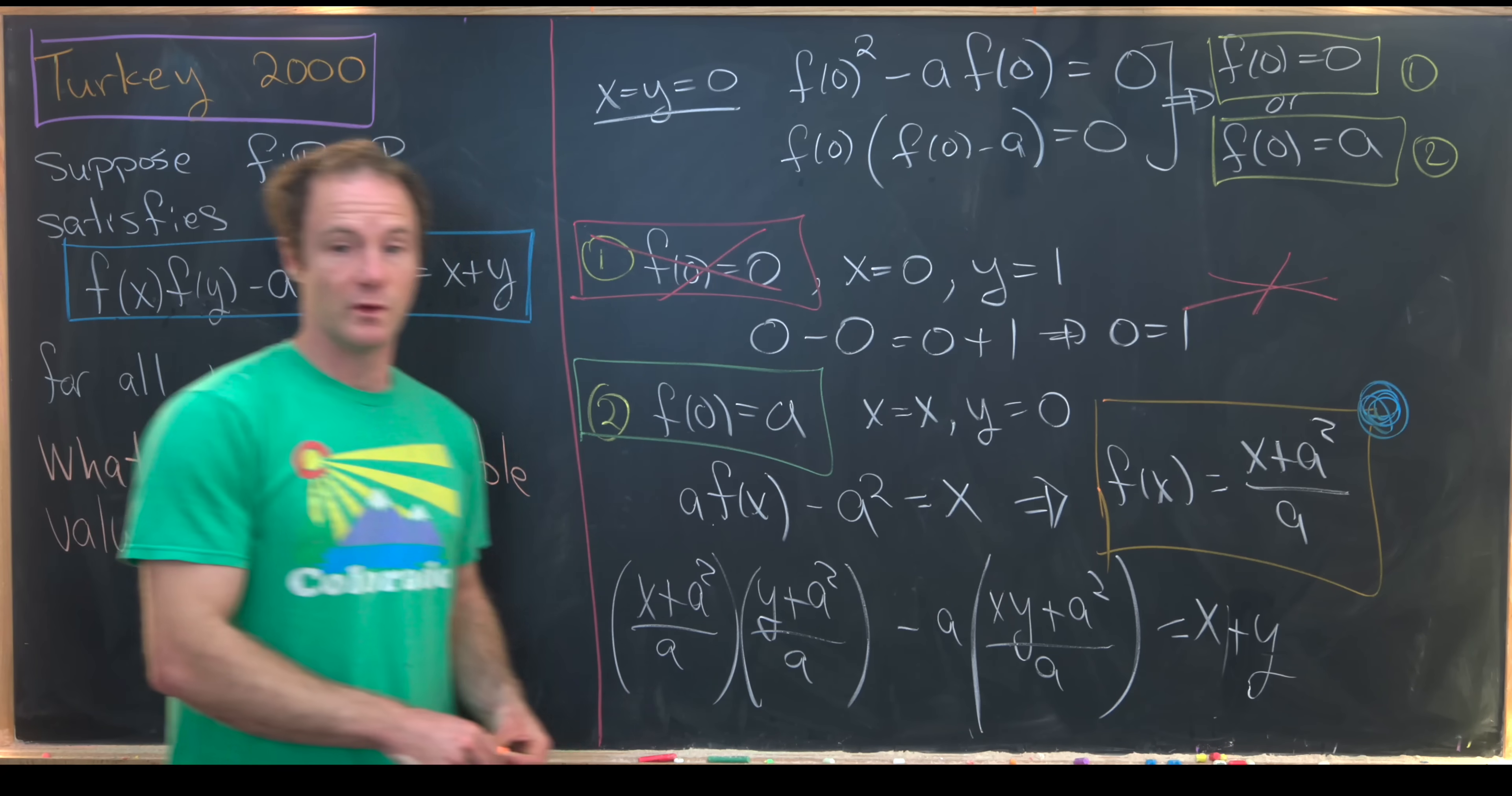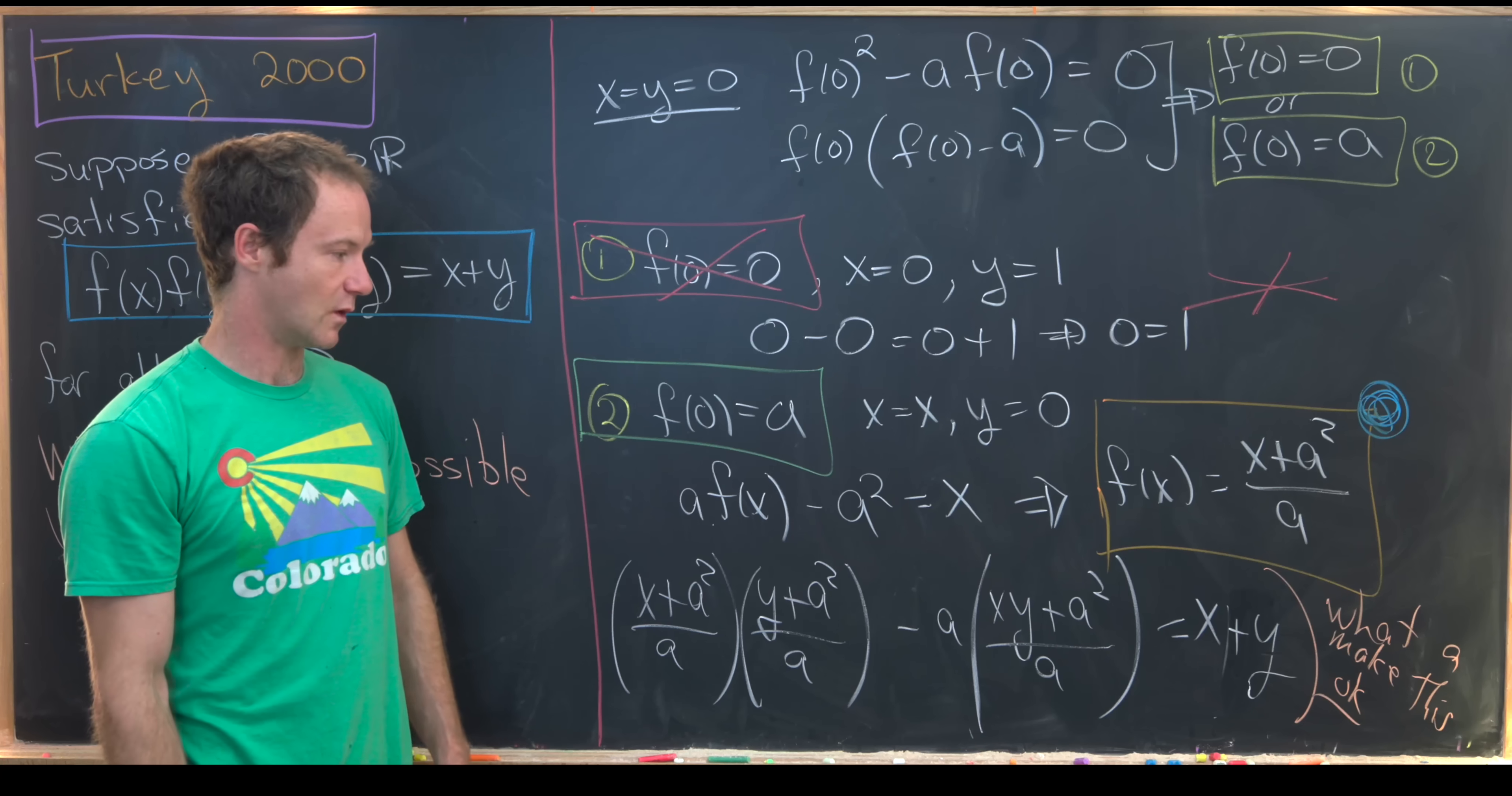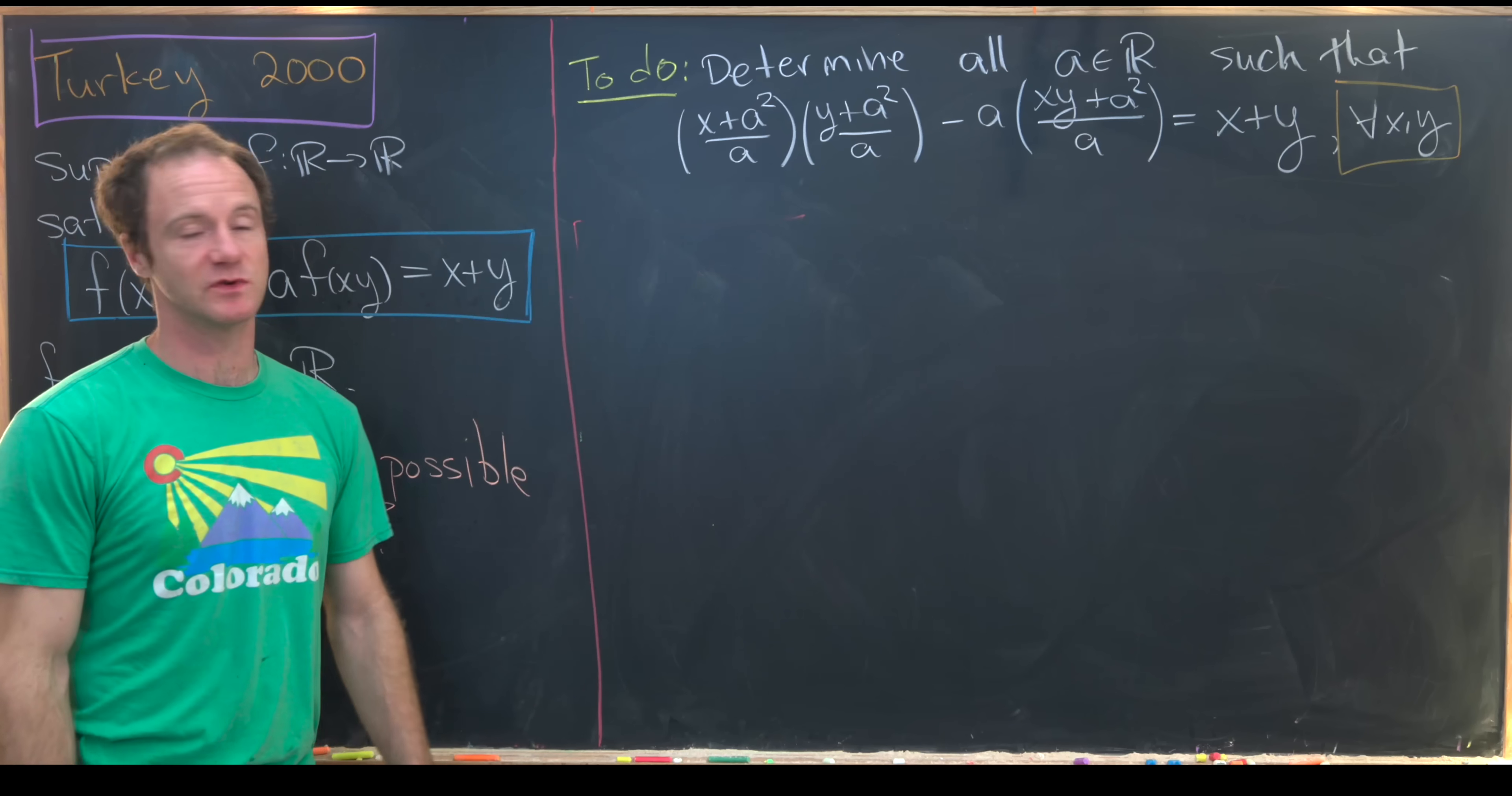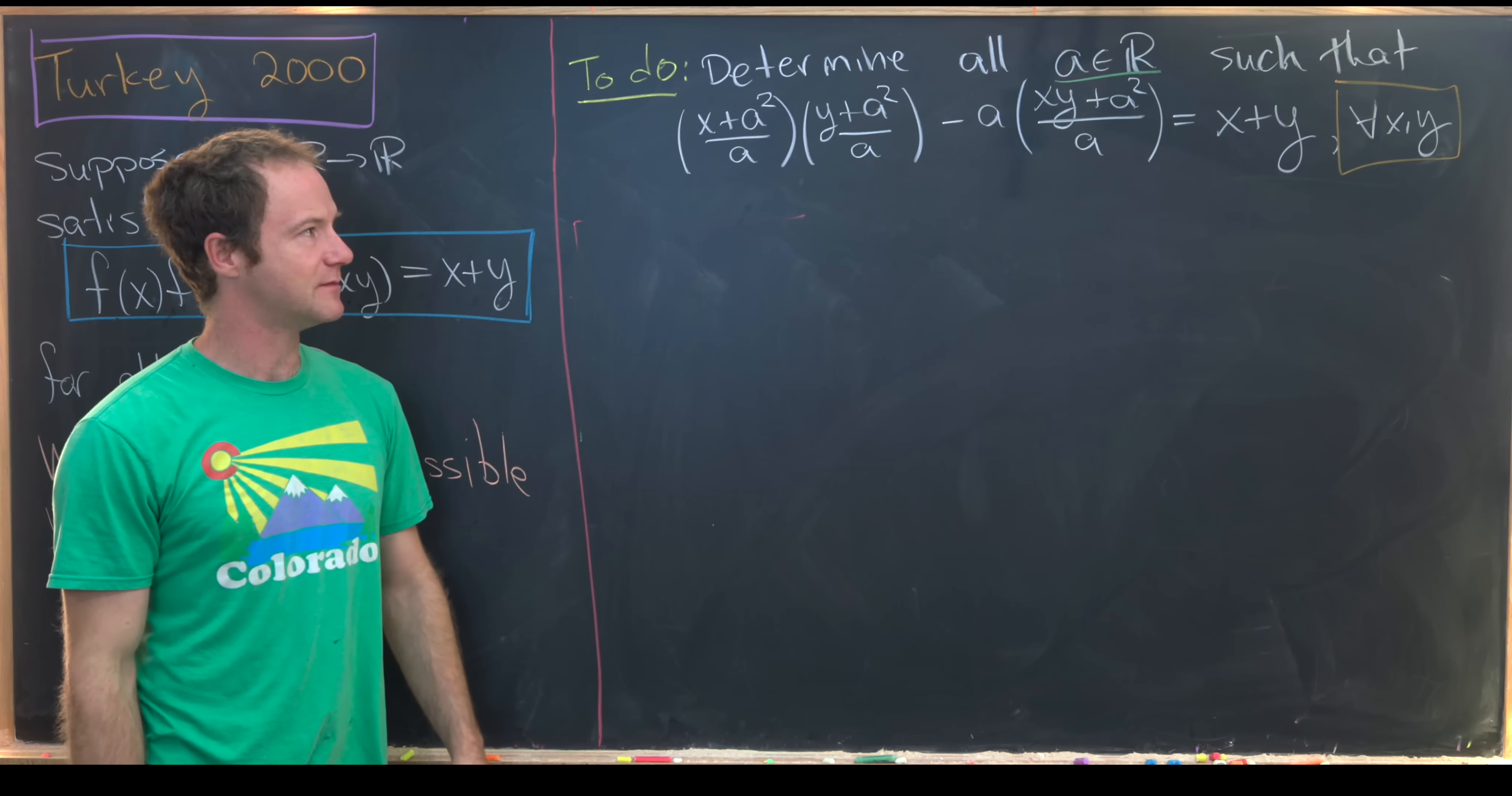And now to finish this off, we want to look for what values of a will make this hold for all values of x and y. So let's summarize what we've got at the top and we'll answer that question, thus answering our goal question. So in the last board, we got our situation down to the following last thing, which is to determine all a, which are real numbers, such that this polynomial equation in two variables x and y is satisfied for all x and y.